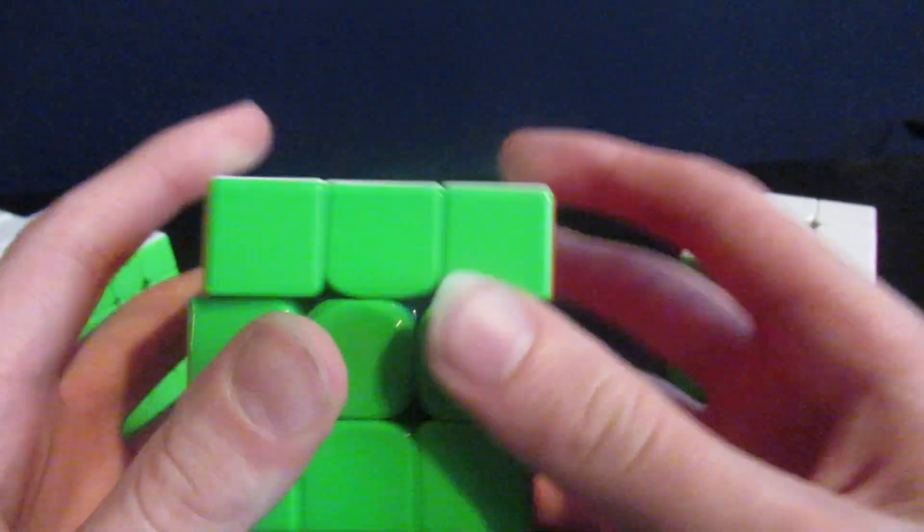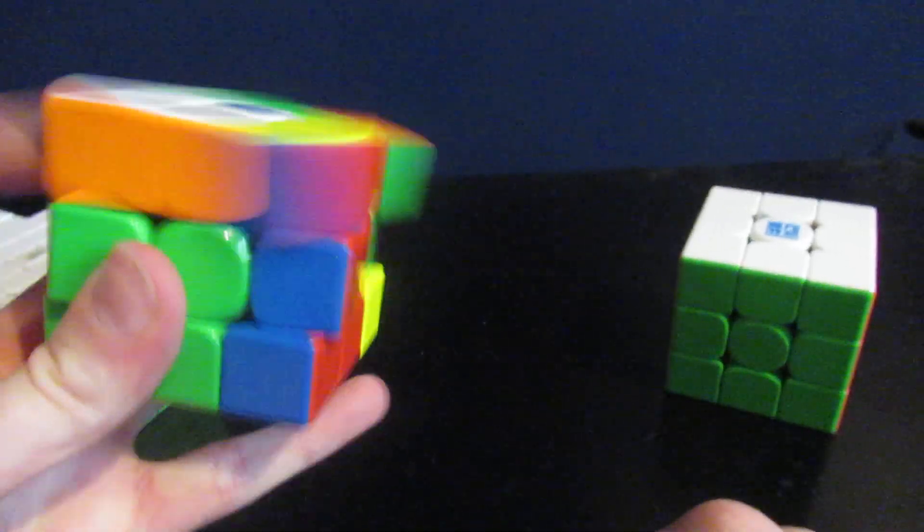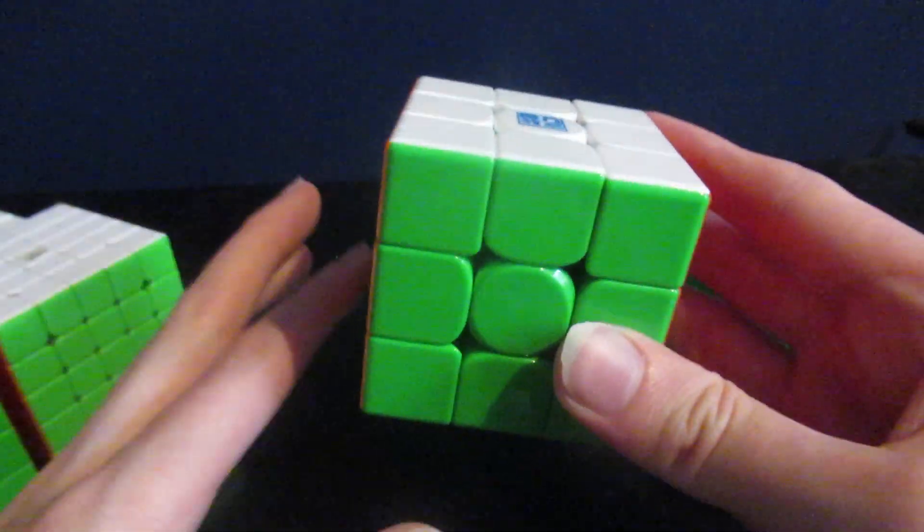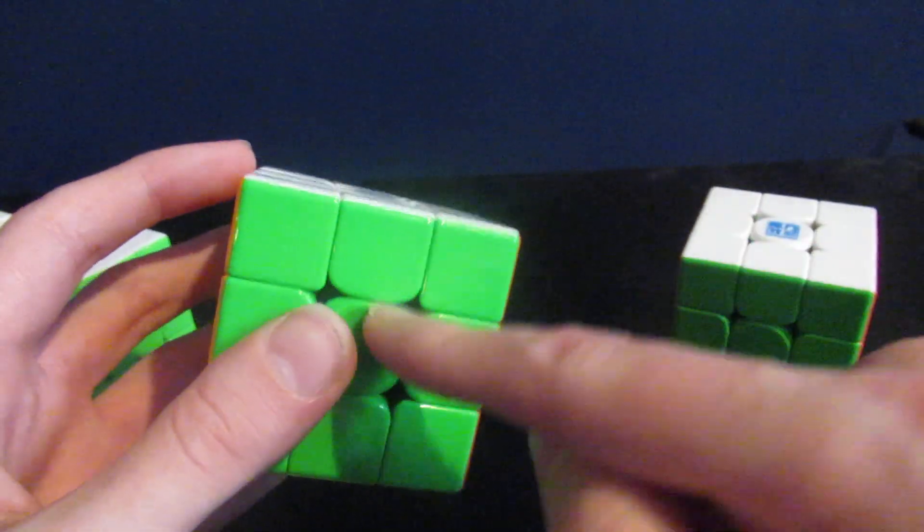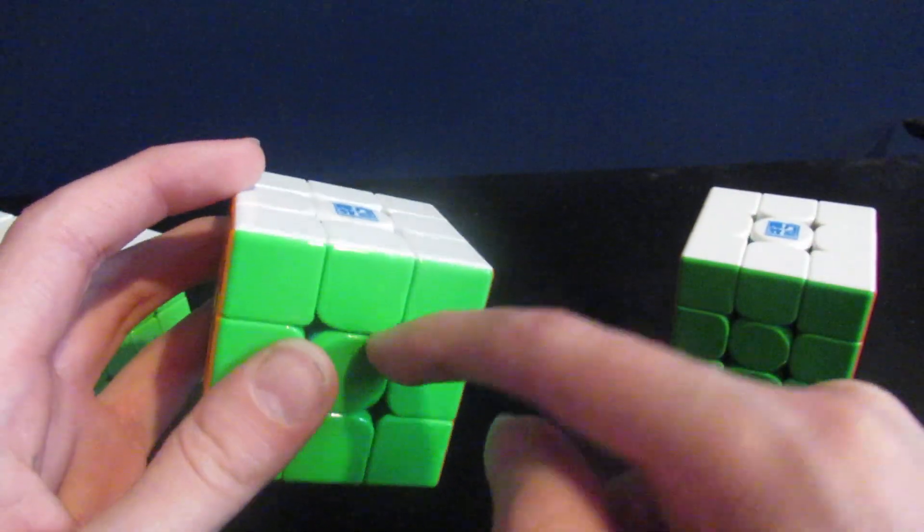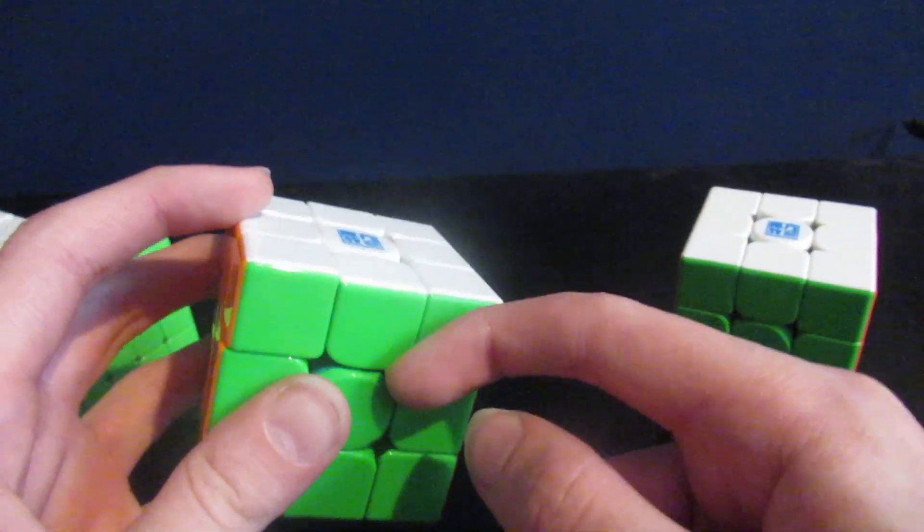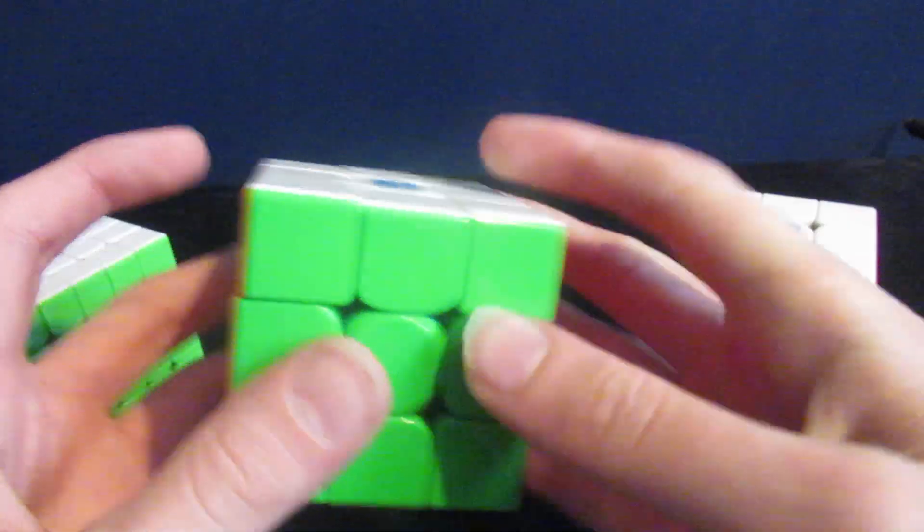For one-handed I'm also using my RSVM v5. My goals are a low 15 average and a low 13 single, and also to podium. I do have a chance of winning one-handed but it's a low chance, and if I podium I'll be happy either way.